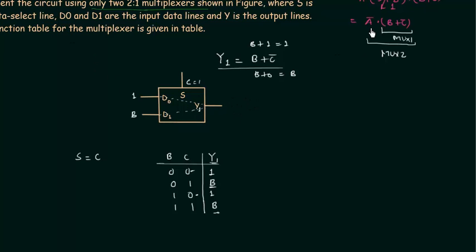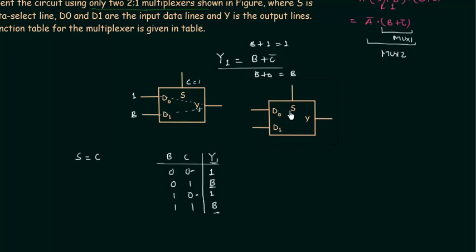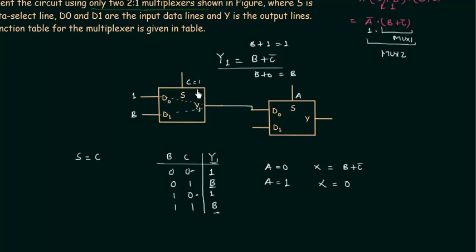Now I implement X = A'(B + C') using a second 2-to-1 MUX with selector S = A. When A=0, A'=1, so the output X = B + C' = Y1, meaning D0 is connected to Y1. When A=1, A'=0, so X=0, meaning D1=0 (ground). This is how we implement the output X using two 2-to-1 multiplexers.